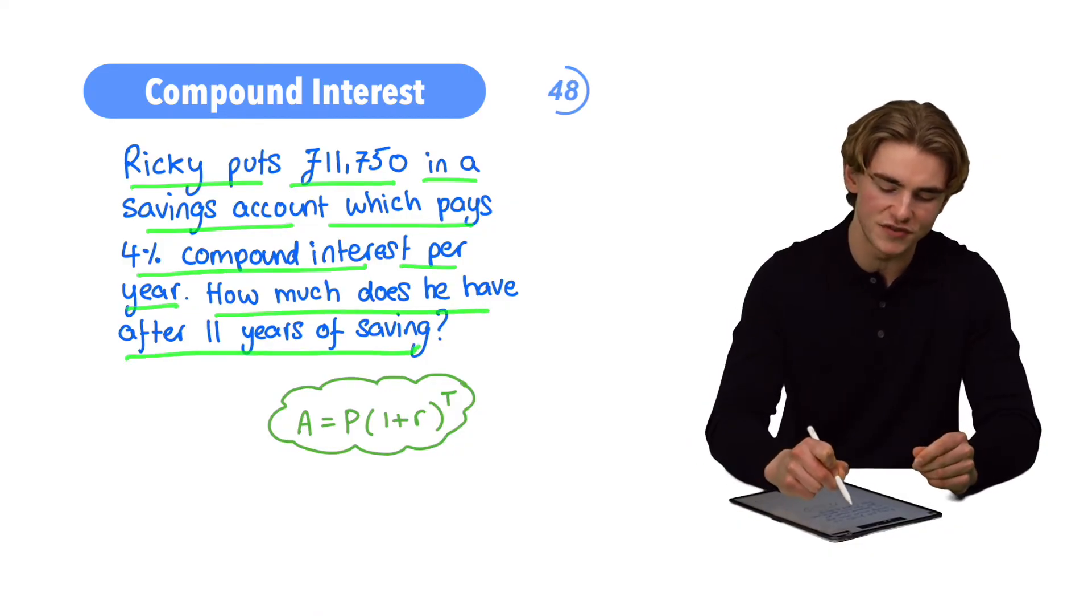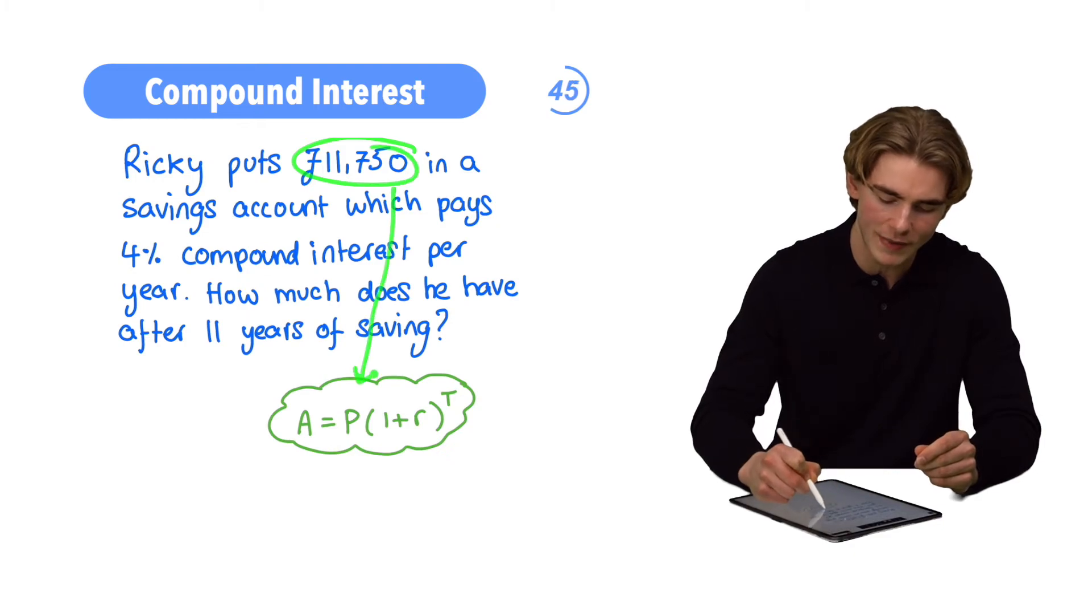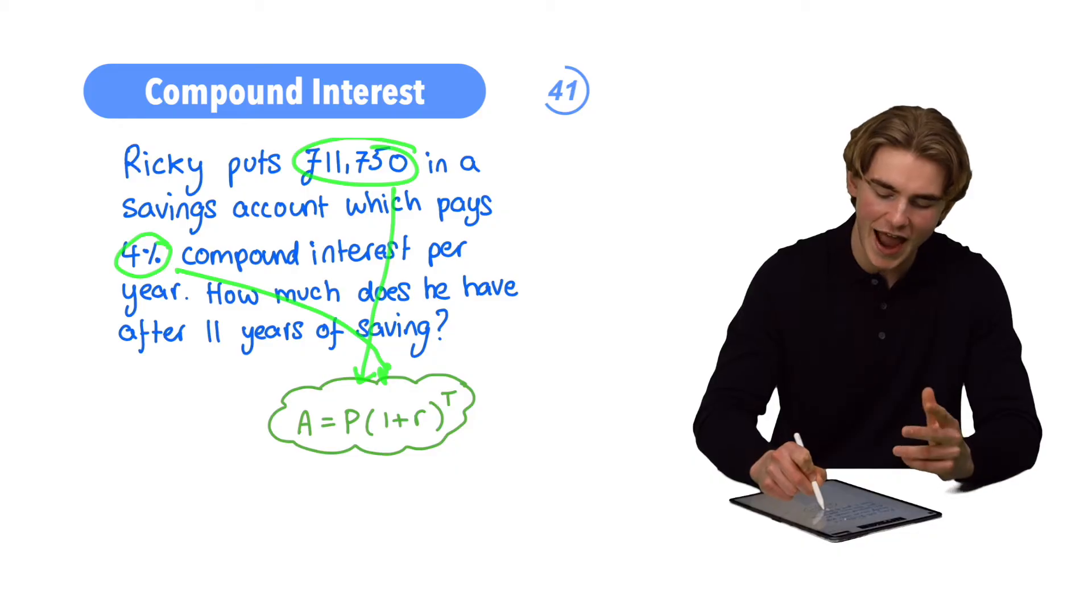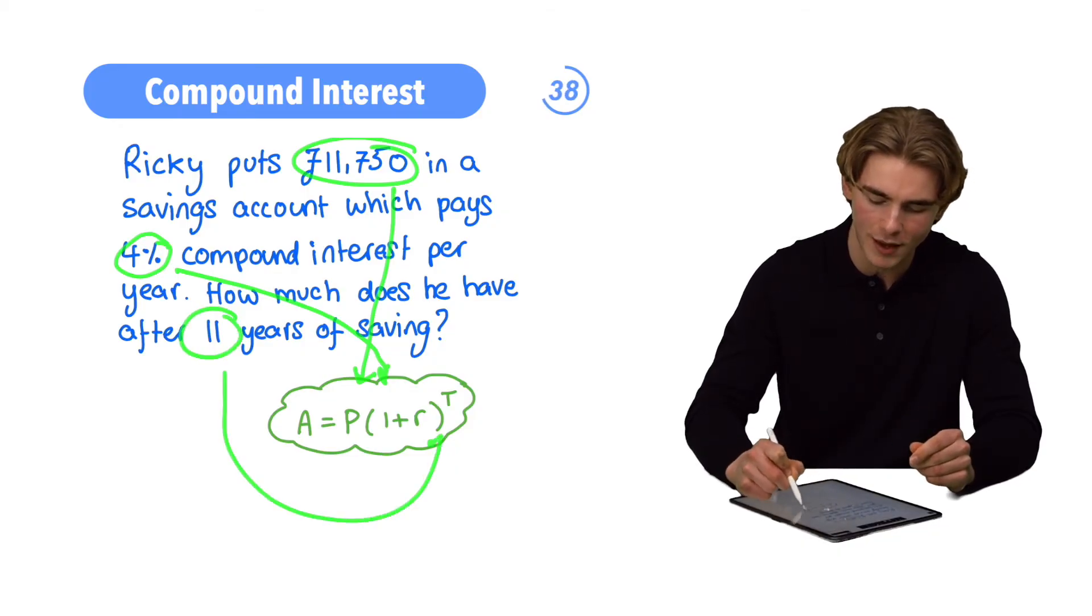So we're going to substitute in £11,750 as our start amount, 4% as our interest rate, and 11 as our number of time periods.